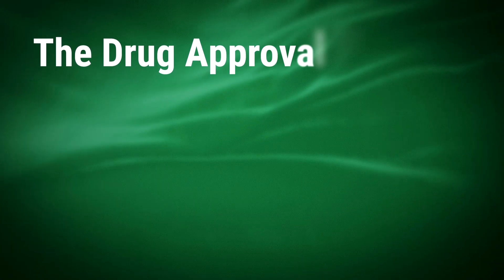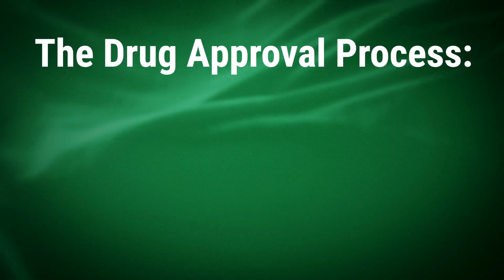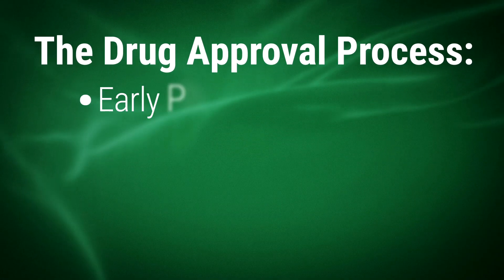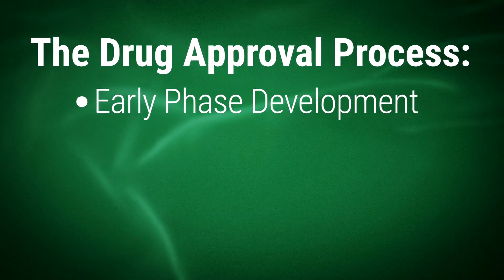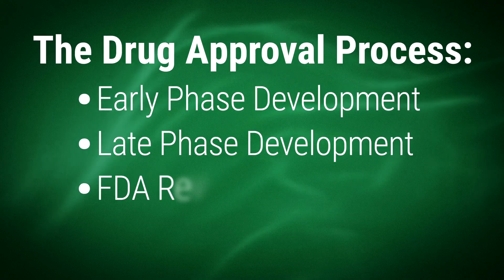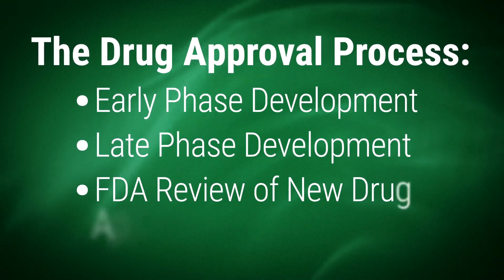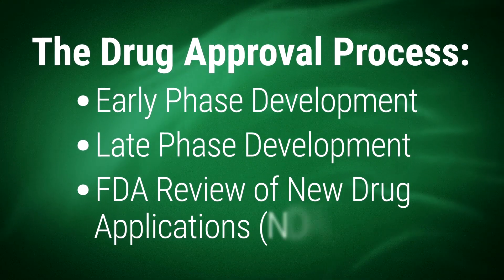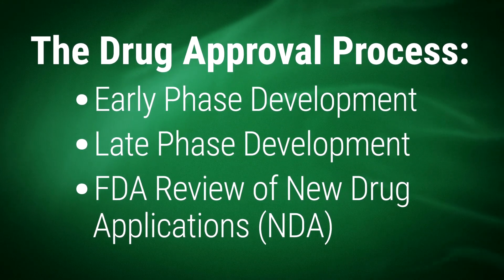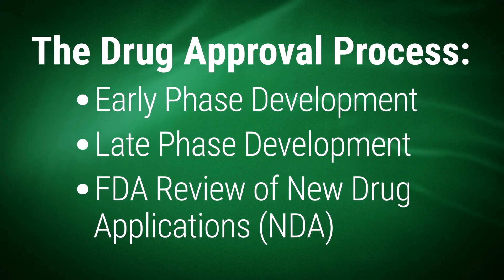The drug approval process can be divided into three parts. The three parts are early phase development, late phase development, and the FDA review of New Drug Applications, or NDA.